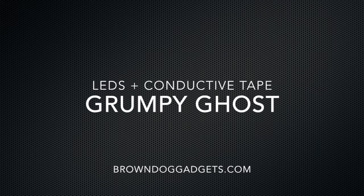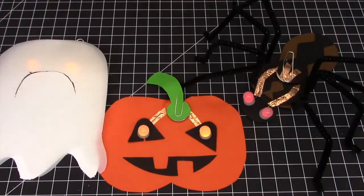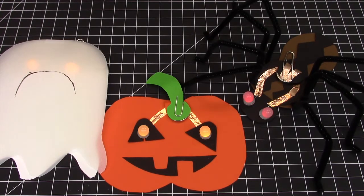Hello, this is Robin of Brown Dog Gadgets and today we're going to do a grumpy ghost with light up LED eyes and conductive copper tape.